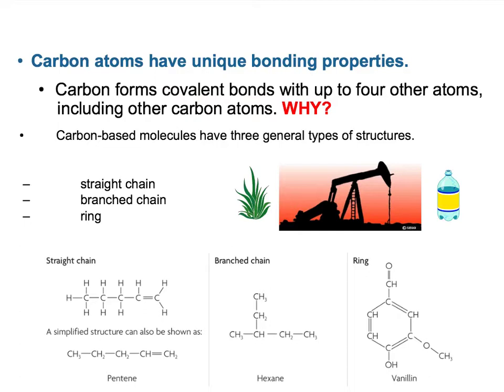Carbon's bonds are pretty much always covalent, and it can bond to four other atoms, making it the maximum available for bond formation. Carbon forms three types of general structures in organic chemistry and biochemistry: it's always the skeleton of the molecules we work with. We see straight chains where all the carbons are linked together, branch chains, and ring-type structures, and we'll see these structures over and over again.